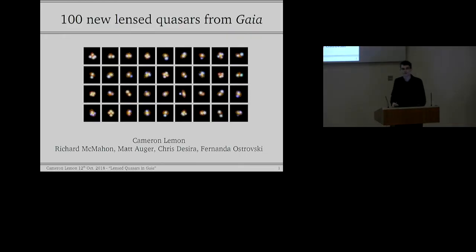Hi everyone, I'm Cameron Lemon. I'm a PhD student at the Institute for Astronomy in Cambridge, working with Richard McMahan and Matt Auger. And today I'm going to show you some work we've been doing with the Gaia data releases to discover the elusive gravitationally lensed quasars. And hopefully I'll explain why Gaia is the perfect machine for finding so many of these systems.